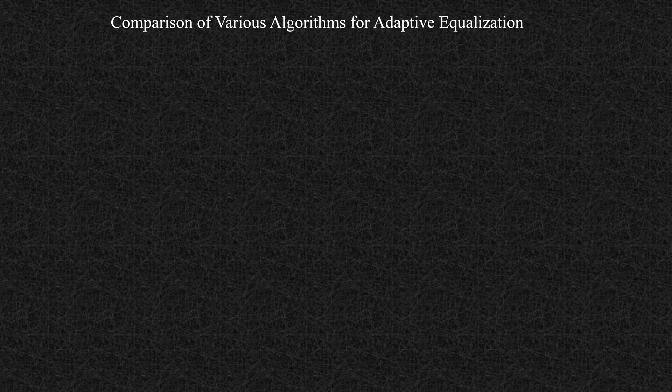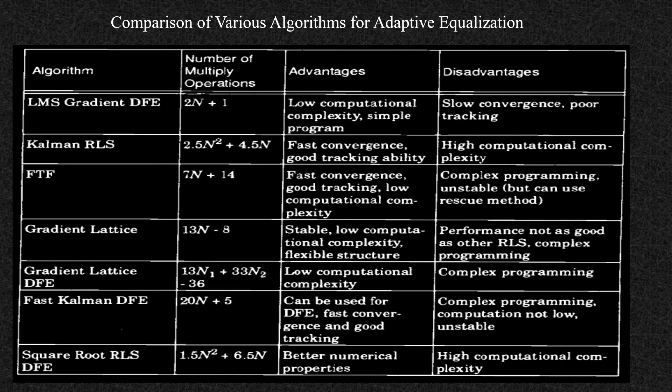Next is a comparison of various algorithms for adaptive equalization. LMS gradient: low computational complexity, simple to program; disadvantage is slow convergence and poor tracking. Kalman RLS: fast convergence, good tracking ability, but high computational complexity. FPF: fast convergence, good tracking, low computational complexity, but complex programming and unstable. Gradient lattice: stable, low computational complexity, flexible structure; performance not as good as RLS, complex programming. Gradient lattice DFE: low computational complexity, complex programming. Fast Kalman DFE: fast convergence and good tracking, but complex programming, not low computational complexity, and unstable. Square root RLS: better numerical properties but high computational complexity.